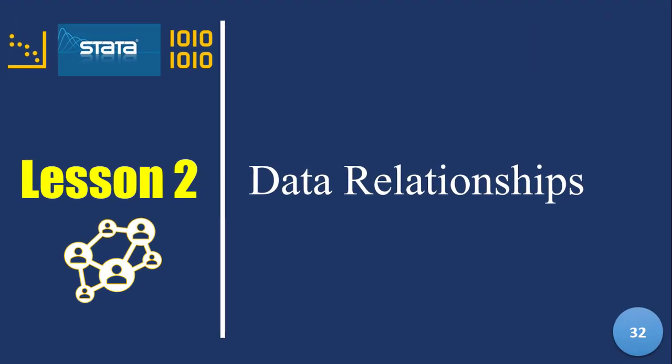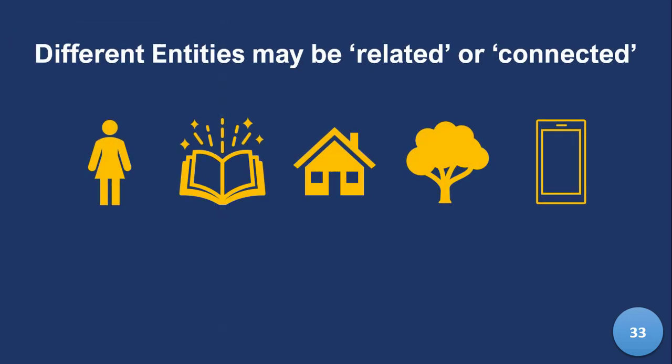Lesson 2: Data Relationships. In the last lesson, we discussed different kinds of entities. If you recollect, we used a lady, a book, a house, a tree, and a tablet or device. One of the things that's very interesting is that these entities that have attributes can be related or have some kind of connection. And that's what I want to talk about in this lesson.